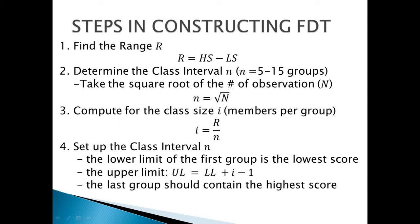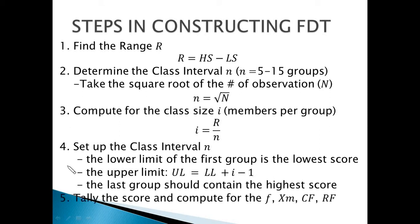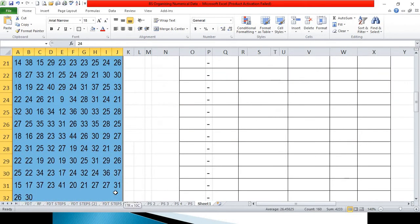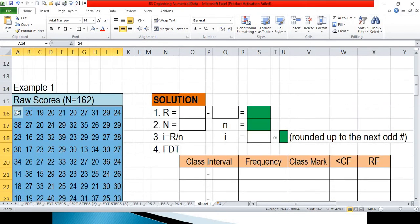The last group should contain the highest score. Step five is to tally the scores and compute for the frequency, class mark, cumulative frequency, or relative frequency. Let's look at example number one. In this example, the raw score or set of data is composed of 162 observations. Step one is to take the range, where you need to locate the highest score and the lowest score.